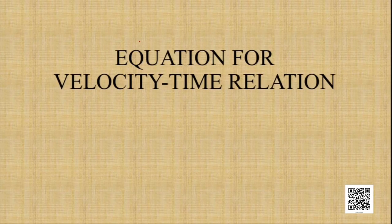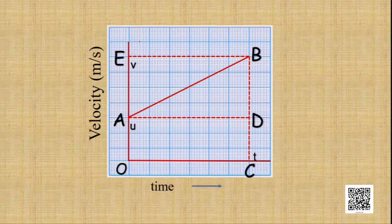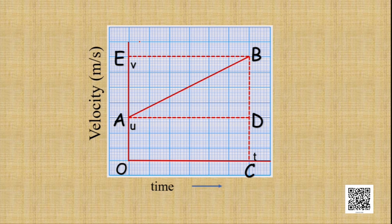Let us first consider the relationship between velocity and time, and find out the equation for the velocity-time relation. Consider this velocity-time graph of an object that moves under uniform acceleration. In the graph, the velocity starts with an initial velocity of u — not u equals zero, but with a certain value. The object starts from velocity u, undergoes uniform acceleration a, and attains a velocity of v after a time interval of t.